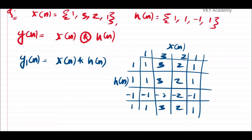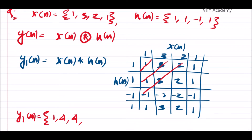Now we perform the addition of diagonal elements. The linear convolution result y1[n] is: the first sample is 1, then 3+1=4, then 2+3-1=4, then 2+1+3-3=3... wait — working through the diagonals gives: {1, 4, 4, 1, 2, 1, 1}. This is the linear convolution result for the two discrete-time signals x[n] and h[n].